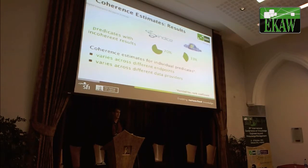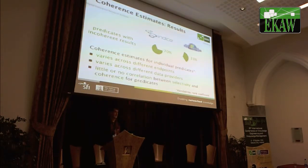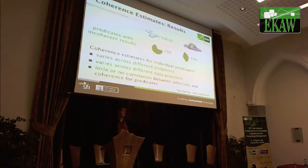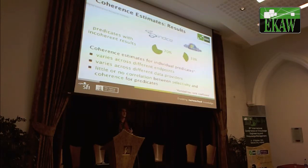We looked at coherence estimates per predicate and found they vary across different endpoints and stores, which indicates we want cache-specific statistics rather than cache-independent ones. Clearly, they also vary across different data providers — social pages have more change volume than, for example, a private homepage or archive. With respect to query processing, we also looked at the correlation between selectivity — the number of results for a pattern — and the coherence measurement. We couldn't find any significant correlation, which means we cannot exploit it directly for query planning.